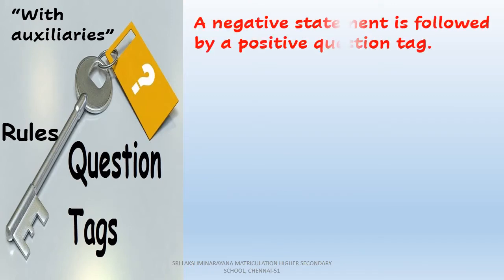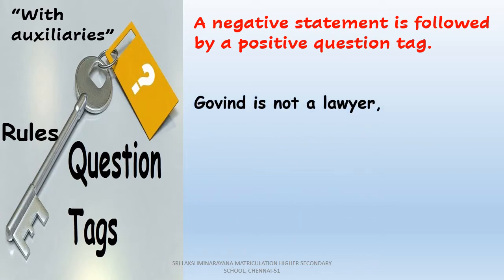Next rule: if the statement is negative, it takes the positive question tag. Look at this example: 'Govind is not a lawyer.' On seeing the word 'not,' you know the sentence is a negative one. So we frame a positive question tag. First, bring out the auxiliary verb — it is 'is.' Since the statement is negative, you need not add 'n't' to the question tag. The subject is Govind, so the correct subject pronoun is 'he.' Finally, end with a question mark.